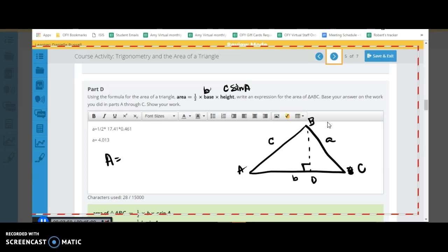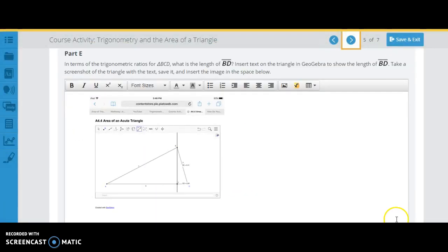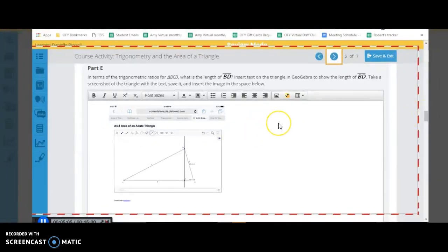And so now our area is going to be one half times little b times c times sine A. Let's just look at this one, too. So now we're going to be using this smaller triangle. You did it perfect.